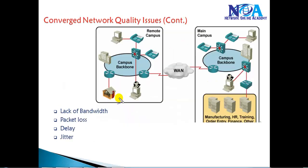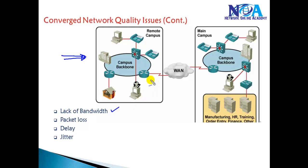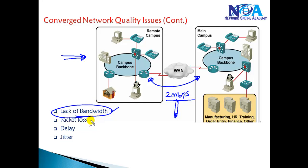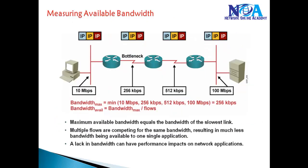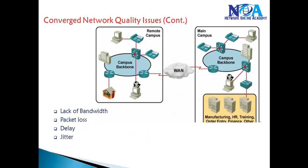The first common problem is the lack of bandwidth. You might be trying to send information over the network, but the WAN link connecting between routers is just 2 Mbps, and we need to send all traffic within that. If there is not enough bandwidth, it will lead to packets getting dropped or the network getting congested.